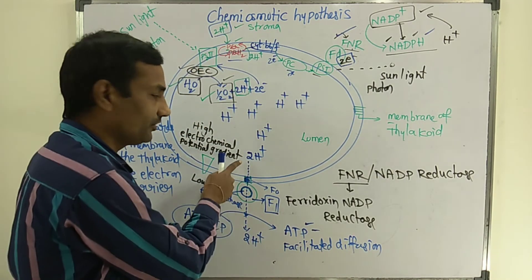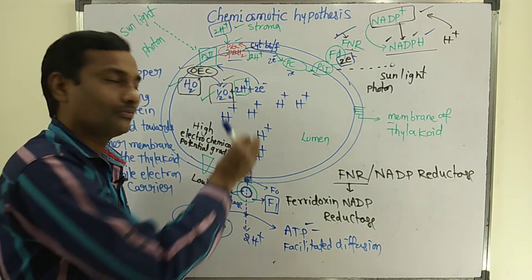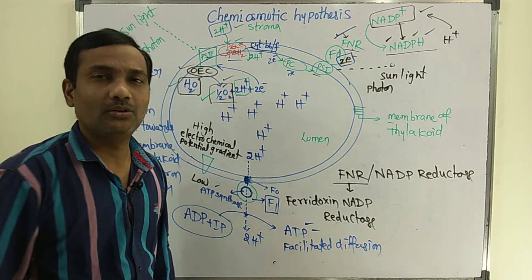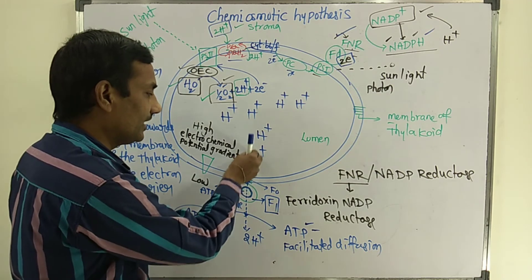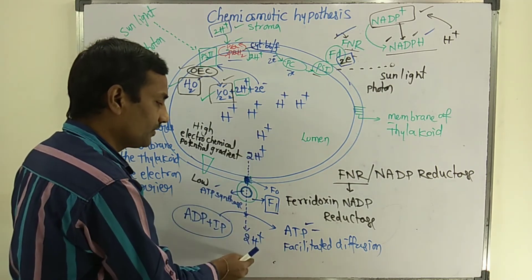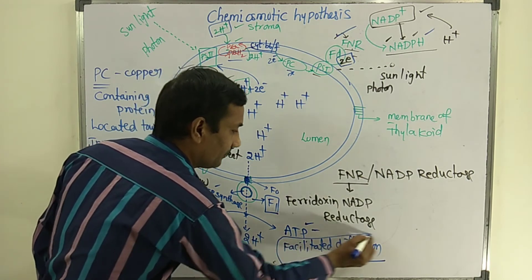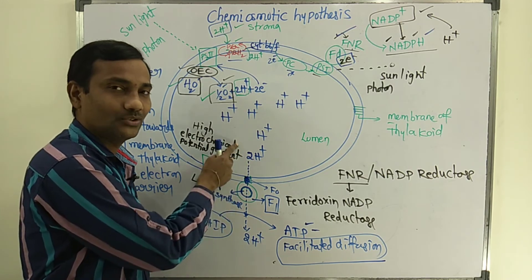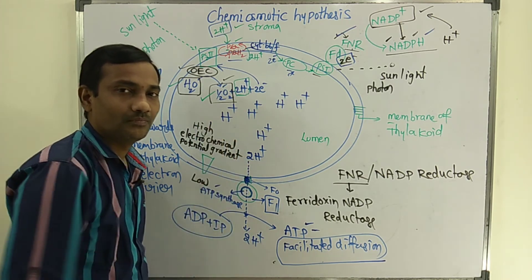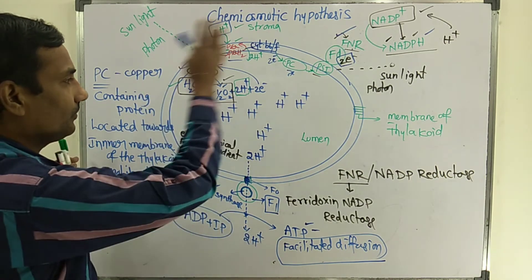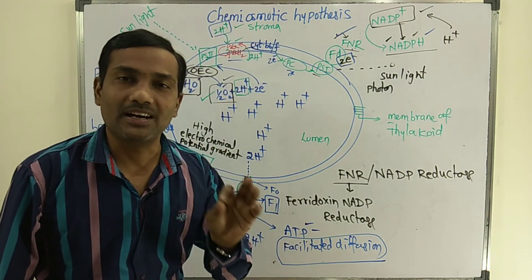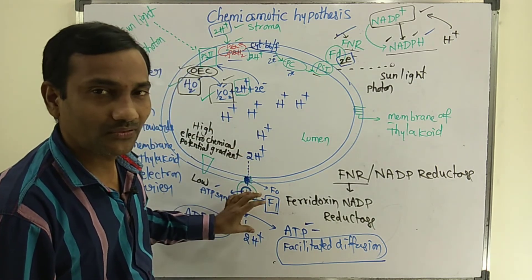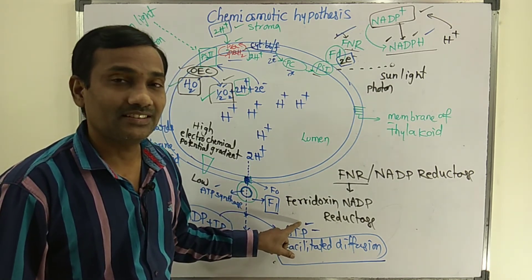ATP energy is not utilized. Movement of ions from high concentration to low concentration through proteins — F0, F1 particles are protein molecules — that helps the movement of protons from lumen to stroma. That is a type of diffusion: facilitated diffusion, because a carrier protein is there, movement is from high to low concentration, and ATP is not utilized. Whenever two protons pass through F0, F1 complex, that helps in synthesis of ATP.